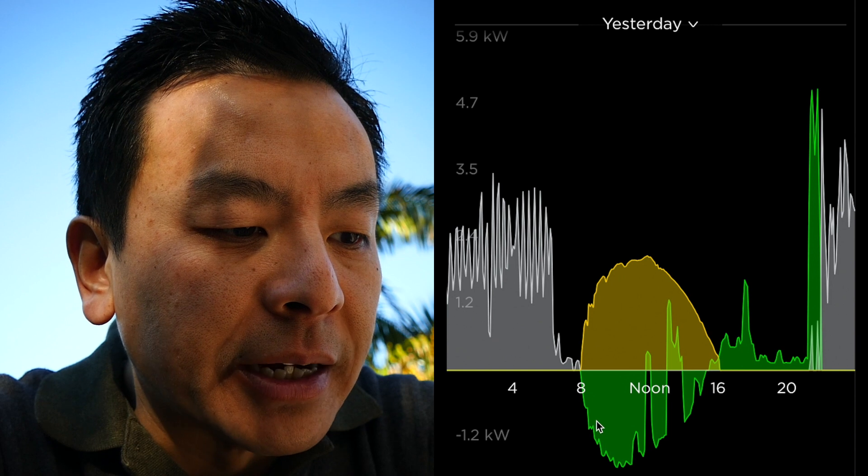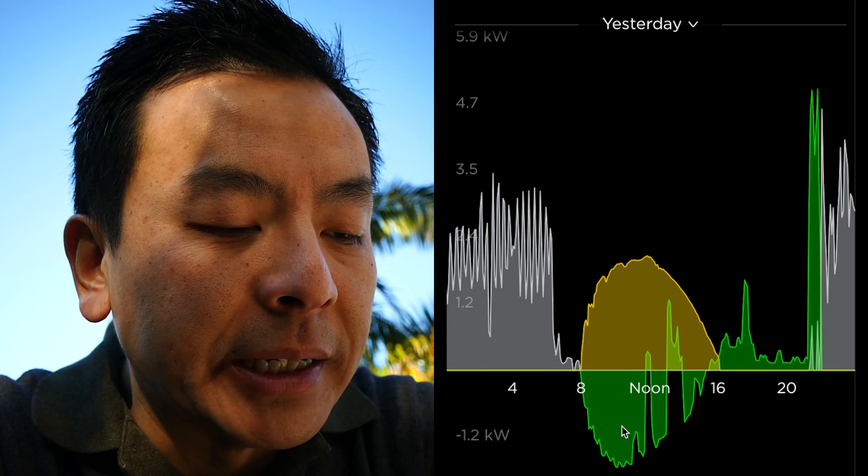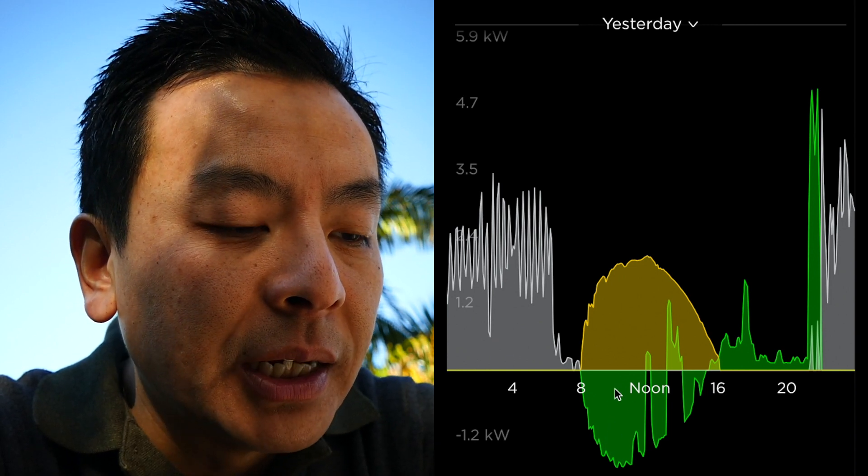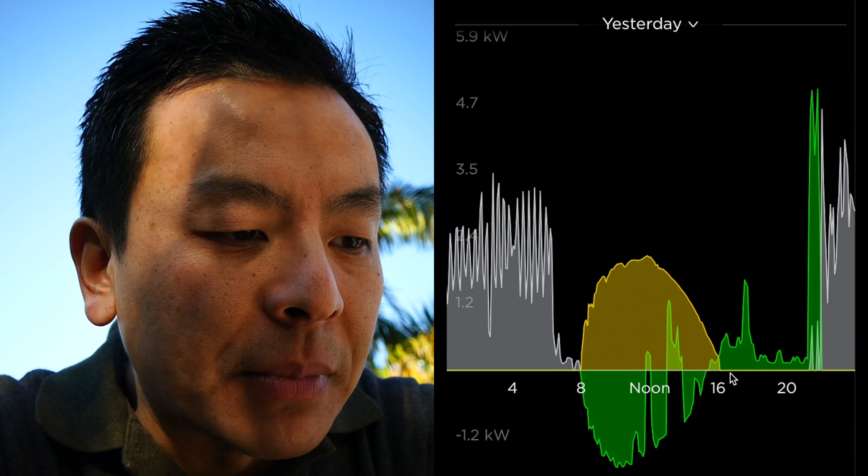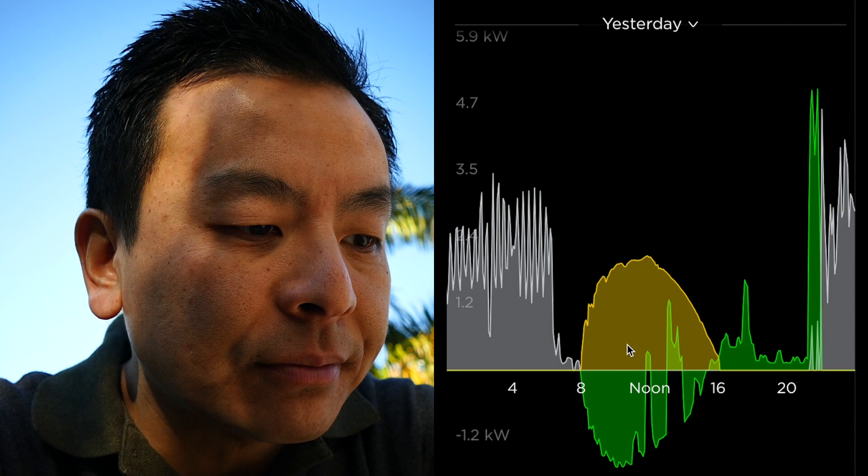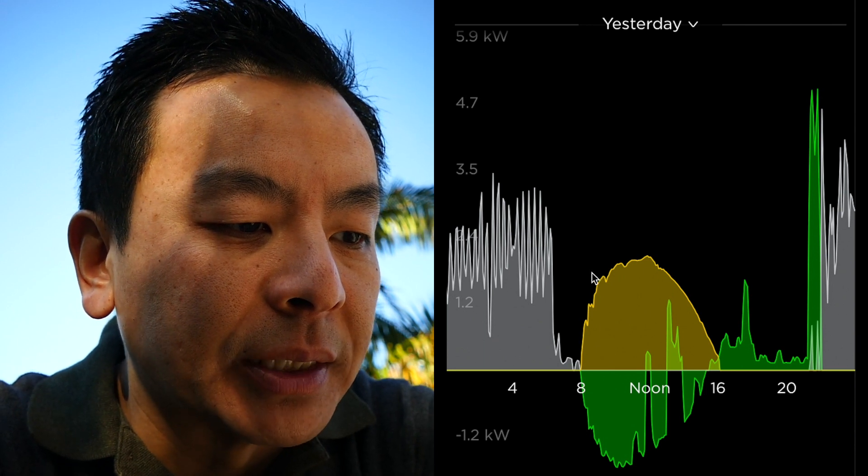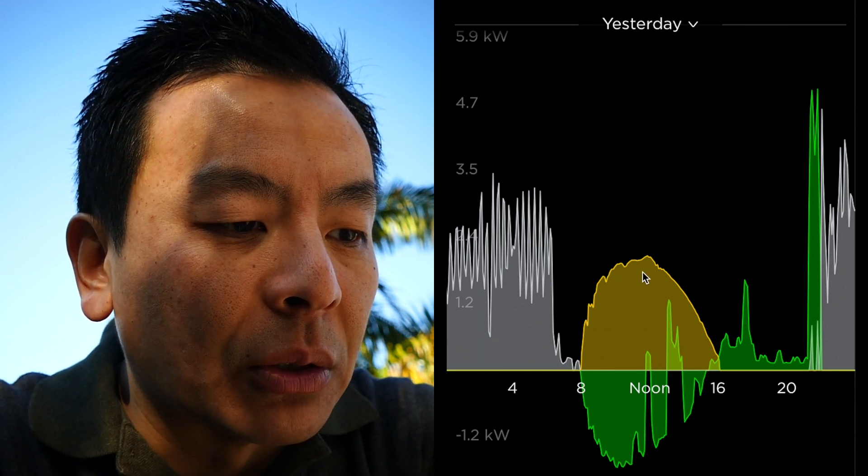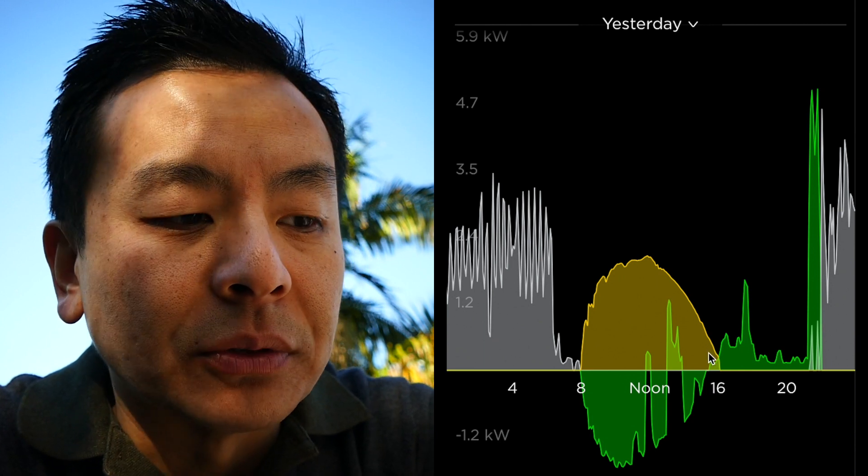So if it's below the line, it means it's accumulating energy from the sun or the grid, and if it's above the line then it's discharging for usage in the house. And obviously the yellow curve here represents the solar energy coming from my solar panels.